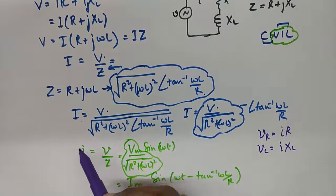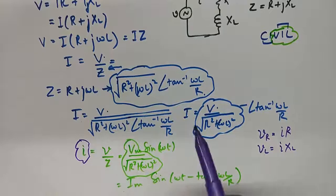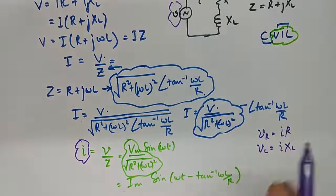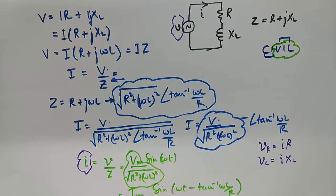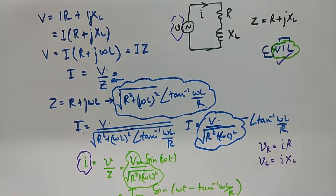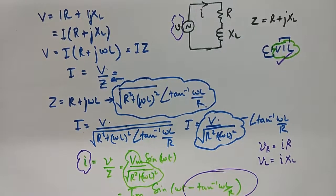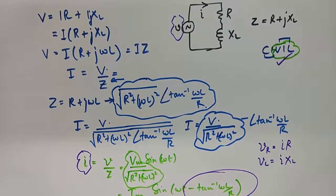But the fact of the matter is, this is our source current, this is our source voltage. The source voltage is leading for sure, as suggested by the trick and as suggested by mathematics. It is leading by an angle of tan inverse omega L by R.